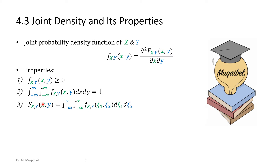The third property is that we can get the CDF by integrating the PDF. We do double integration because we have two random variables. Remember that we cannot have the same variable in the integral — we have X and Y — so we need a dummy variable. You can call it Zeta 1, Zeta 2, Eta, or whatever dummy variable you want, because finally we'll substitute the limits and Zeta 1 and Zeta 2 will disappear. The CDF is the integral of the PDF; if joint, integrate based on how many random variables you have.